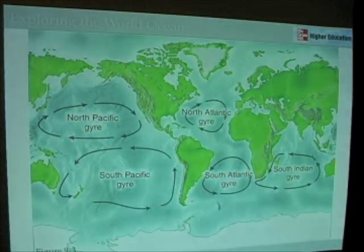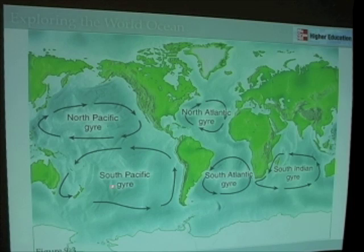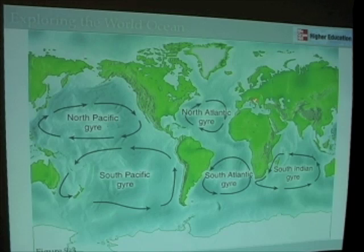Taking a look at figure 9.3 from the book, here are the five major subtropical gyres: the North Pacific gyre, the South Pacific gyre, the North Atlantic gyre, the South Atlantic gyre, and the South Indian gyre.